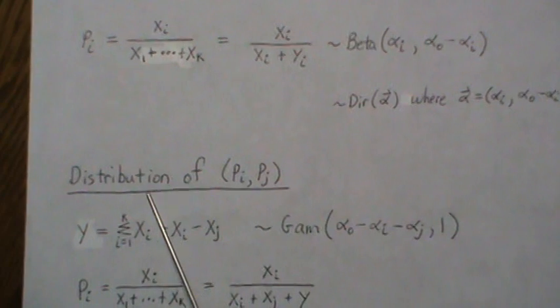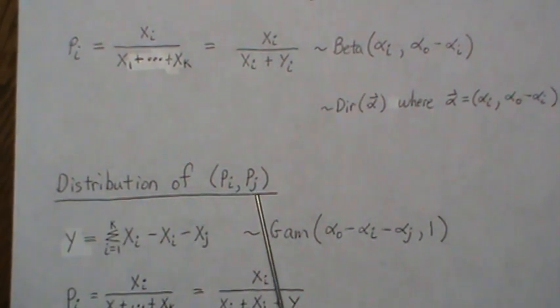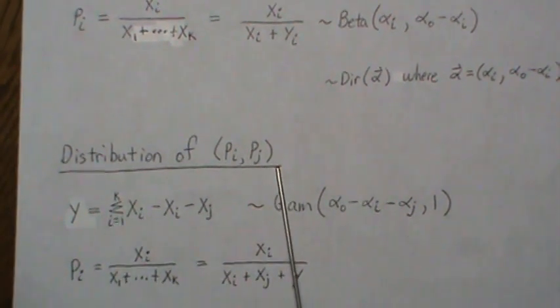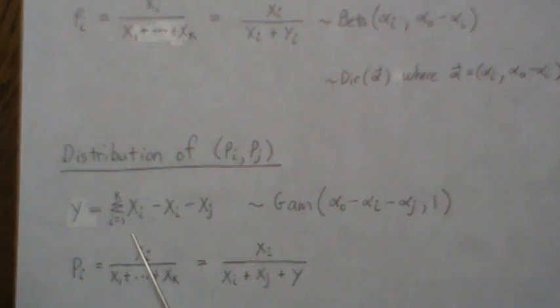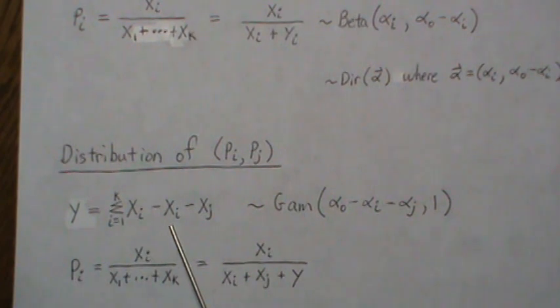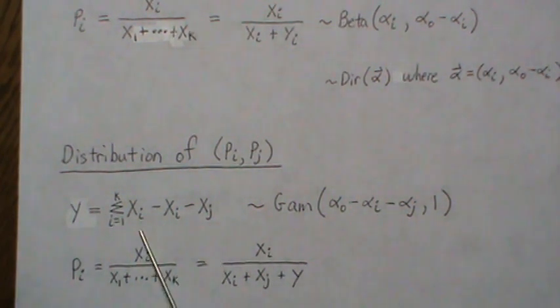Now, if we look at the joint distribution of pi and pj, we do something very similar. So we sum all the Xs except for the i-th one and the j-th one. So that's what this term is. But since all these Xs are independent, gamma variables, it's also a gamma, right?